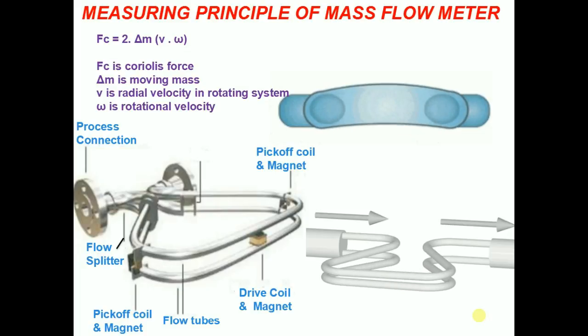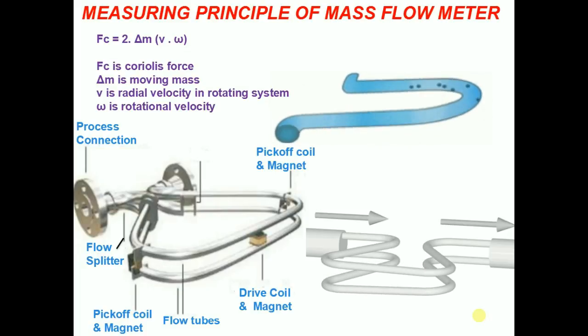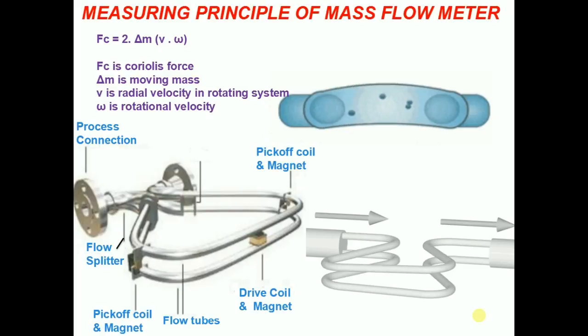As each coil moves through the uniform magnetic field of the adjacent magnet, it creates a voltage in the form of a sine wave.